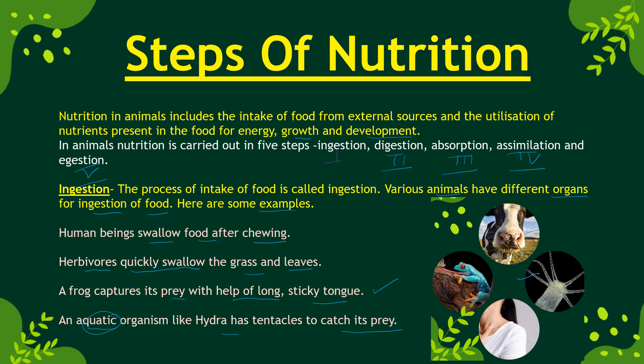The amoeba is a unicellular organism that captures food and takes it into its body. Spiders inject venom into their prey and then perform ingestion. Earthworms swallow food using their muscular pharynx. Butterflies have a long tube-like structure called a proboscis through which they suck nectar from flowers.